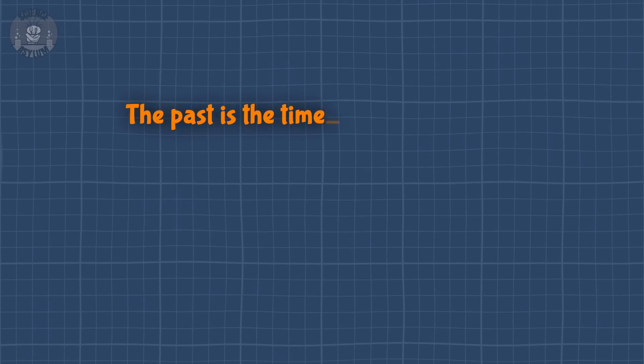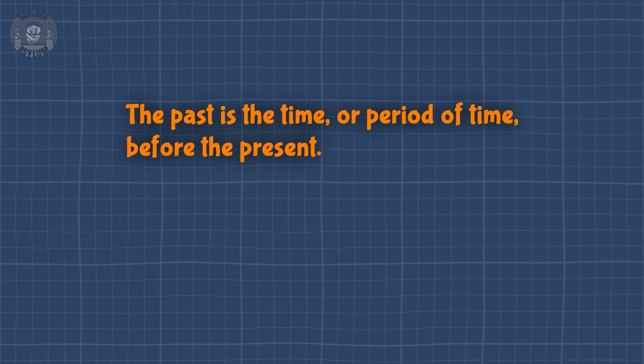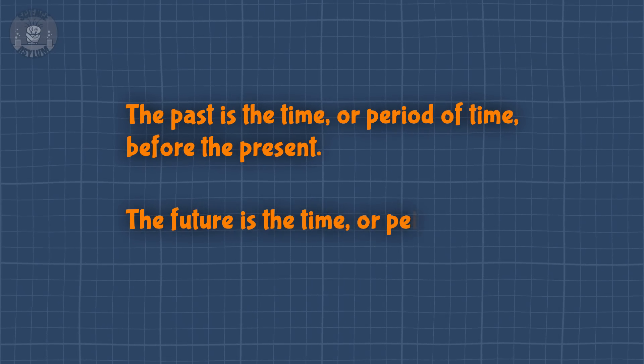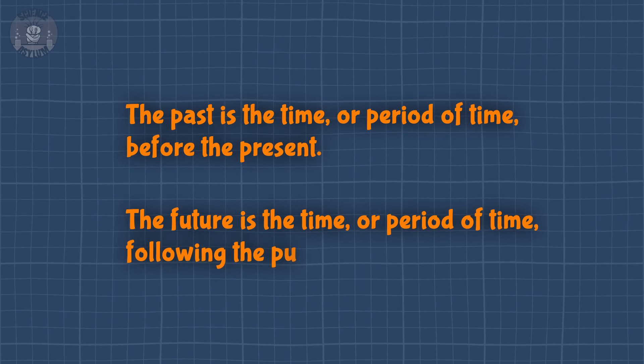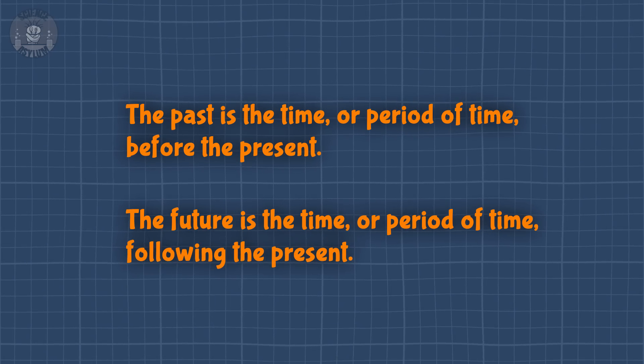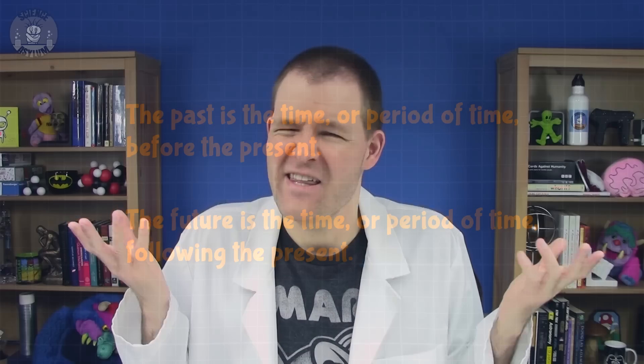The past is the time or period of time before the present. The future is the time or period of time following the present. So both of these are defined in terms of the current moment. That kind of makes sense.